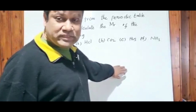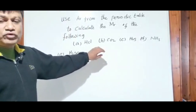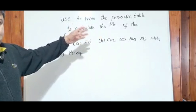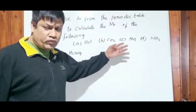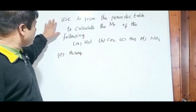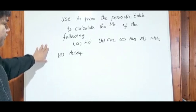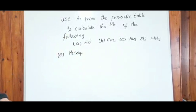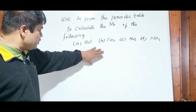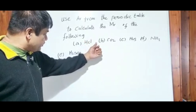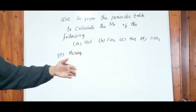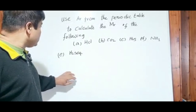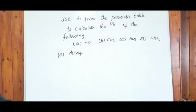Welcome back to my channel. I want to continue from my previous video and learn some more examples to calculate the MR of a compound. Can you see the question? Do you want to work out the MR? Just follow the technique I taught you and work out the MR of the following compounds. The first one is hydrochloric acid — I'll teach you the formula in my later videos. Let's do carbon dioxide.